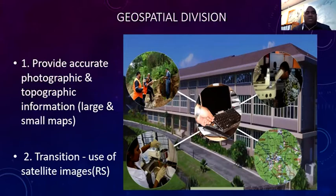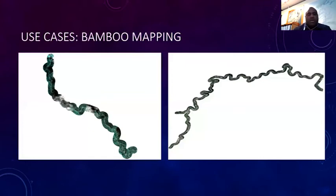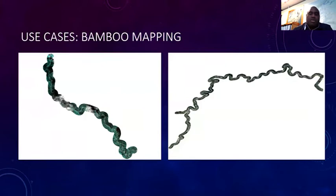The division has recently set up a remote sensing unit whose main task is to use satellite imagery to support the department's operations and other government agencies. While we don't have access to multiple imagery datasets, we use what we have. An example of work with other government agencies is the bamboo mapping along the Wainimala River using a 20-meter buffer.